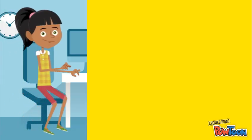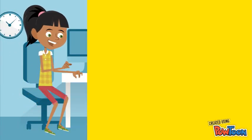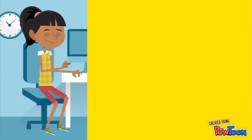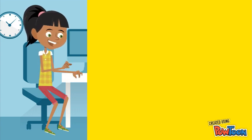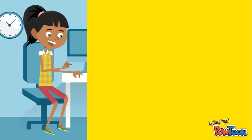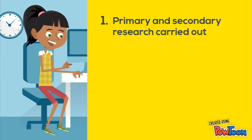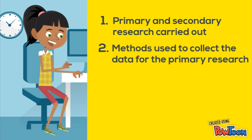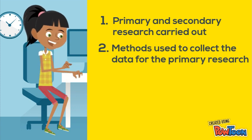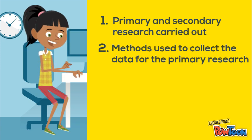You may want to show your reader that you used recognized and reliable methods to collect your data, so it is important that you have the following information in this section. First, you must include the primary and secondary research carried out. Two, the methods used to collect the data for your primary research.